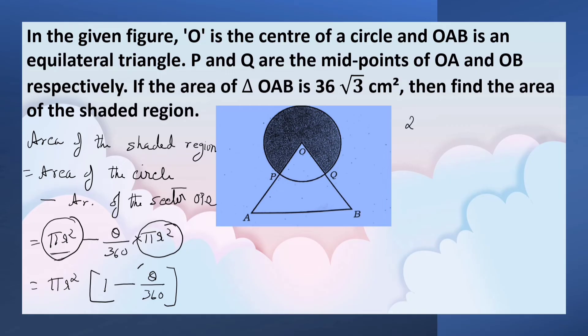Pi is 22 by 7. Radius is 6 into 6. 1 minus theta is 60 by 360. That is equal to 22 by 7 into, you can multiply it or leave it as such. Both are equal.